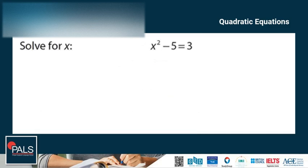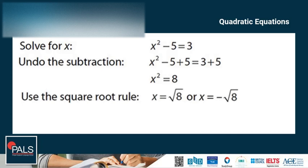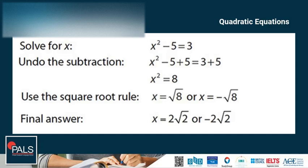Another example: x squared minus 5 is equal to 3. The first thing we need to do is undo the subtraction by adding 5 to both sides. So minus 5 plus 5 is 0 and 3 plus 5 is 8, giving us x squared is equal to 8. Using the square root rule, we have x is equal to the square root of 8 or x is equal to negative the square root of 8. The final answer is x is equal to 2 times the square root of 2 or negative 2 times the square root of 2.